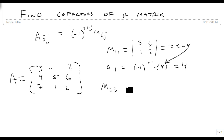M23 was equal to, we're ignoring the second row, third column: 3, minus 1, 7, 1, which was equal to 3 plus 7, or 10. But A23 is minus 1 to the 2 plus 3 times that M23, which is 10, which is minus 1 times 10, so A23 is minus 10.